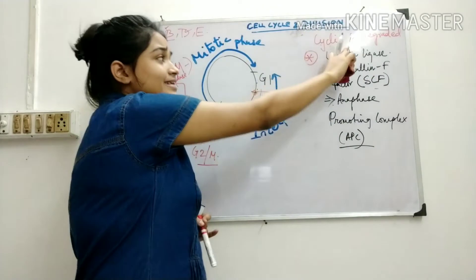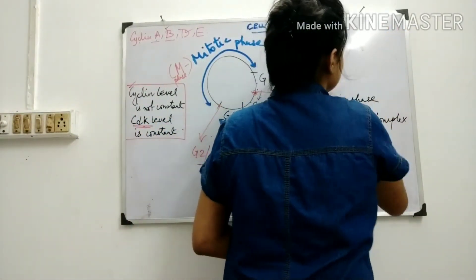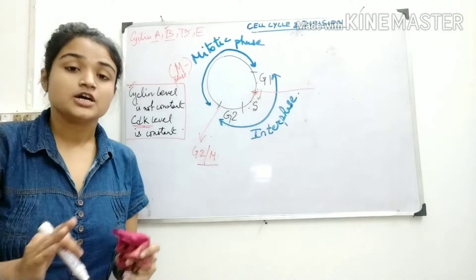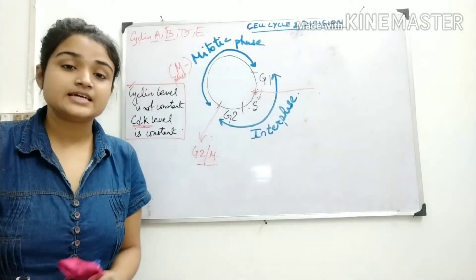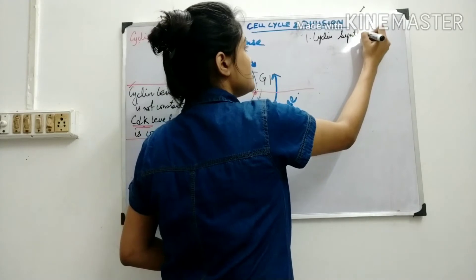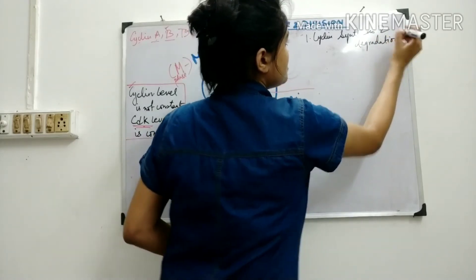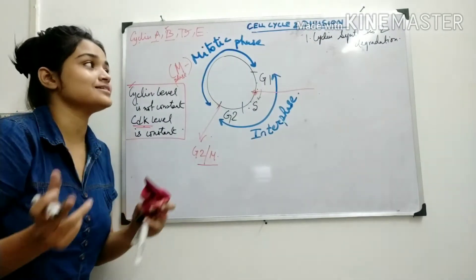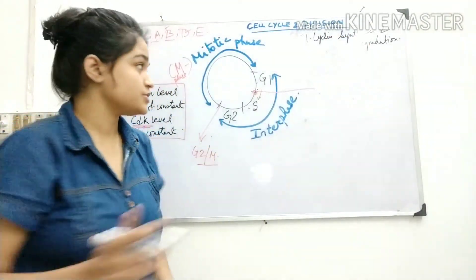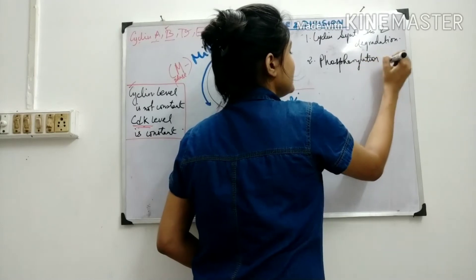When cyclin is degraded, CDK activity is inhibited. There are three mechanisms by which CDK activity is regulated. The first is cyclin synthesis and degradation: when cyclin synthesis is higher, cyclin level is higher and CDK is active; when cyclin is degraded, CDK is inactive. The second mechanism is phosphorylation and dephosphorylation.